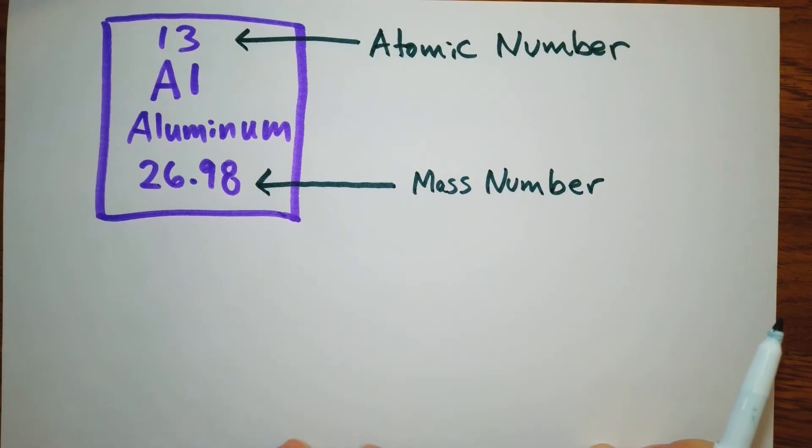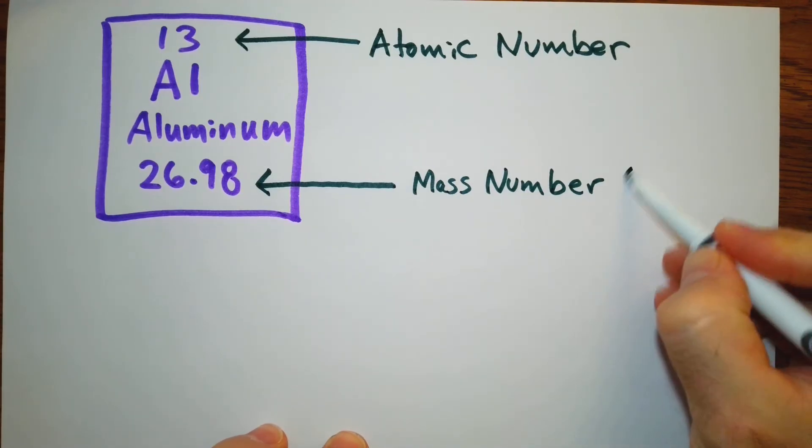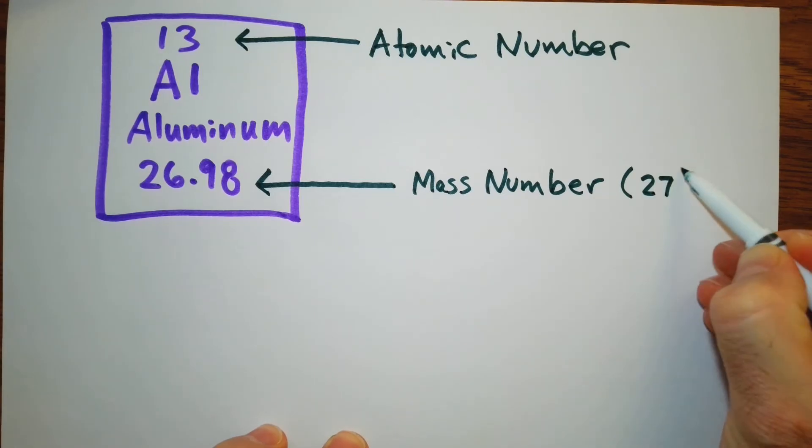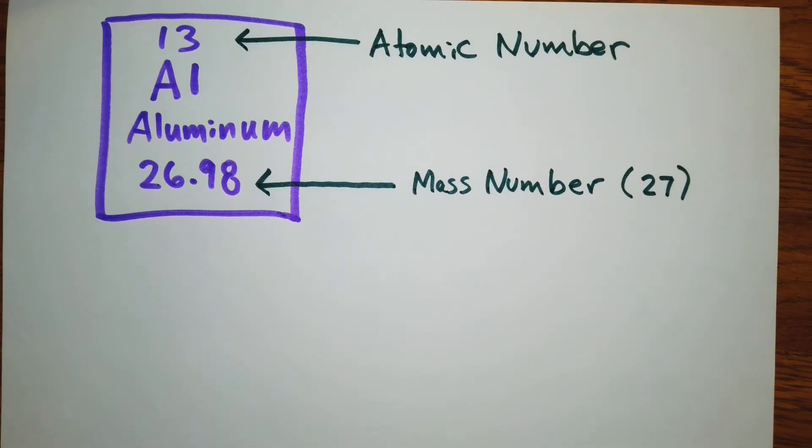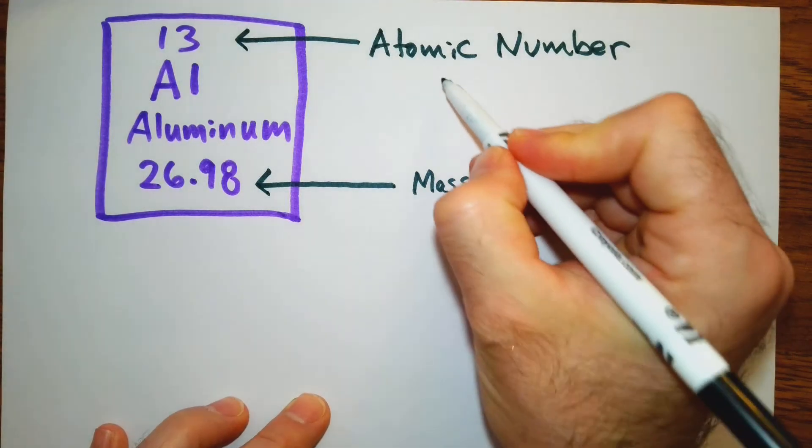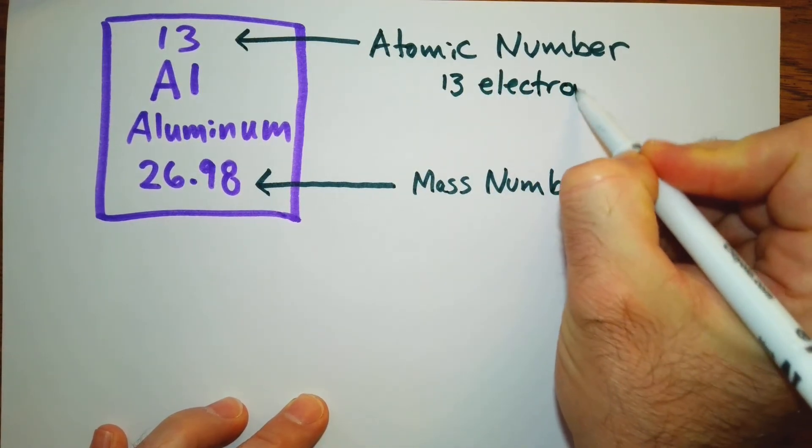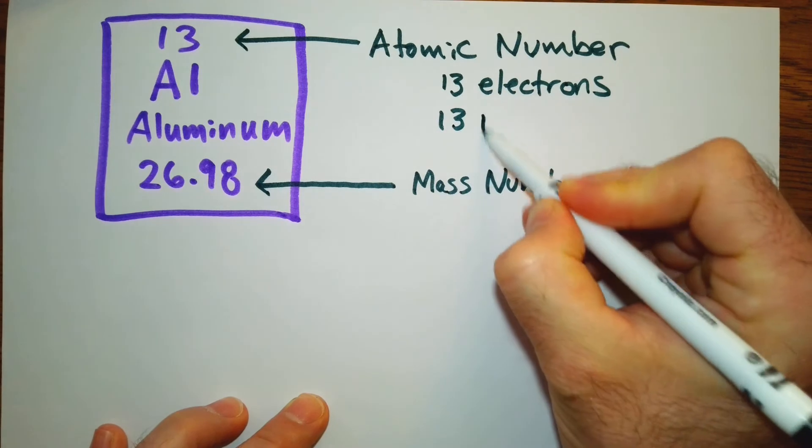We're going to round that up to the whole number, and that's going to be 27. So our atomic number, remember that tells the number of protons, and it also tells us the number of electrons. So we can say we have 13 electrons. We have 13 protons.